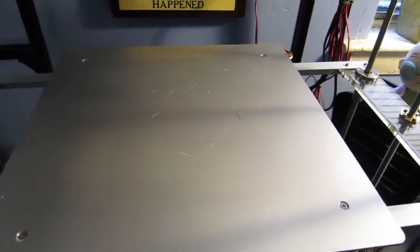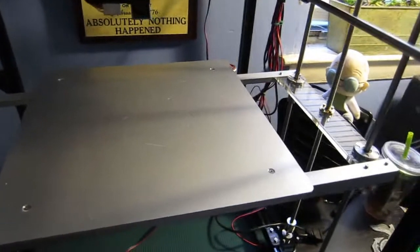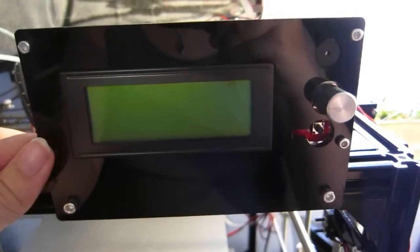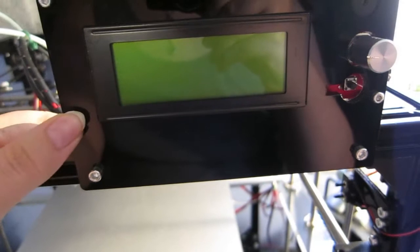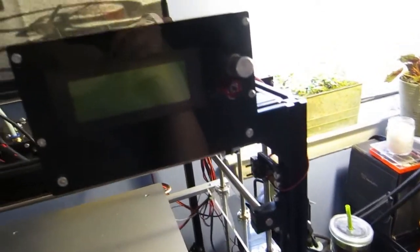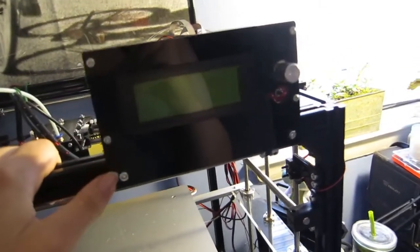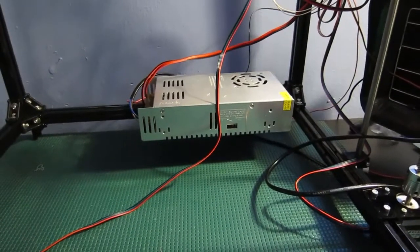Up here is the LCD screen, the power supply, the board, and the filament support, which is right back here. All of those are adjustable, so you can put them where you want them. If you don't want them on the printer at all, that's fine, but it does come with mounts for everything, which I think is great.